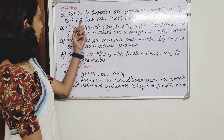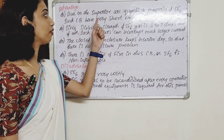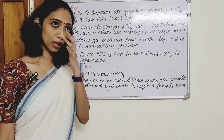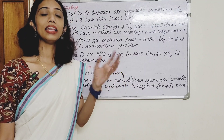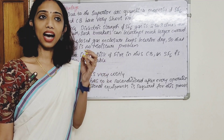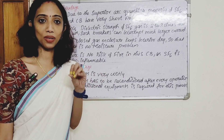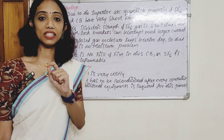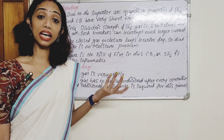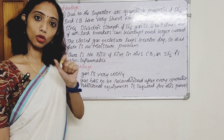The advantage is that due to the superior arc-quenching property of SF6, such breakers have very short arcing time. The high-pressure SF6 flow rapidly captures free electrons to form negative immobile ions, building high dielectric strength to extinguish the arc quickly.